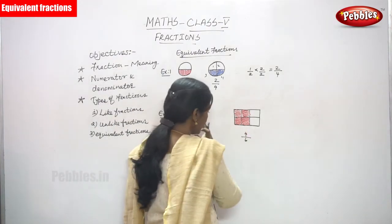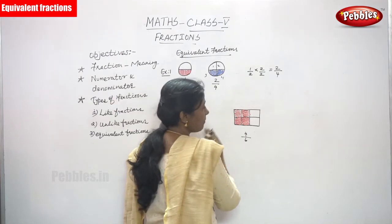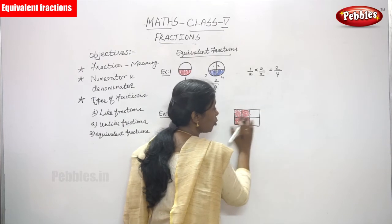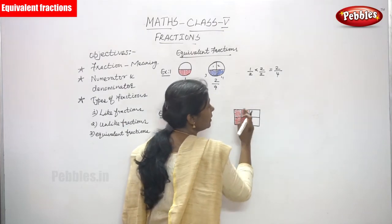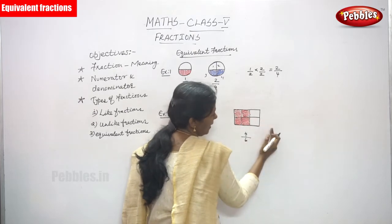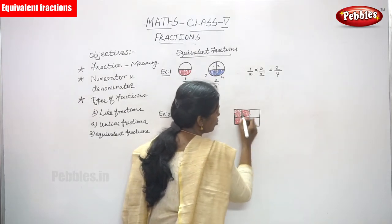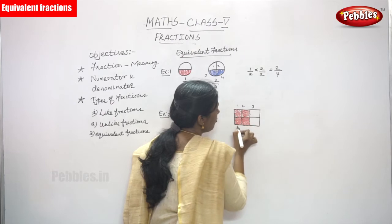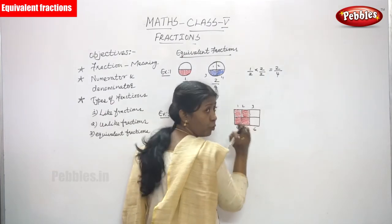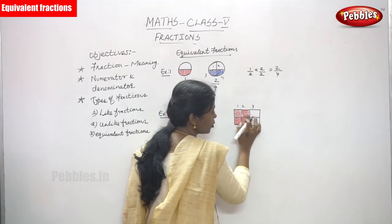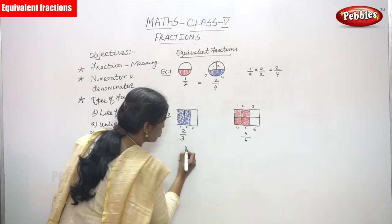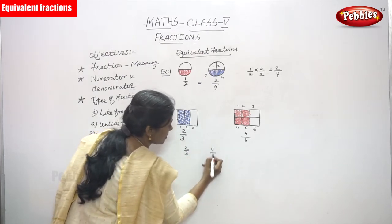And for the next diagram, I draw the same rectangle but I cut it into 6 equal parts — 1, 2, 3, 4, 5, 6. The total parts is 6, but I shaded only 4 portions. So the fraction is 4 by 6. So we have 2 by 3 for the first rectangle and 4 by 6 for the second.